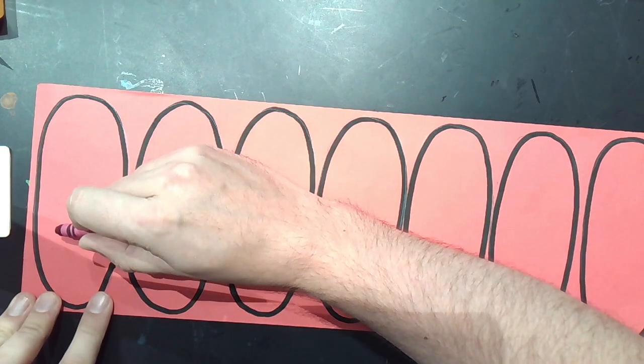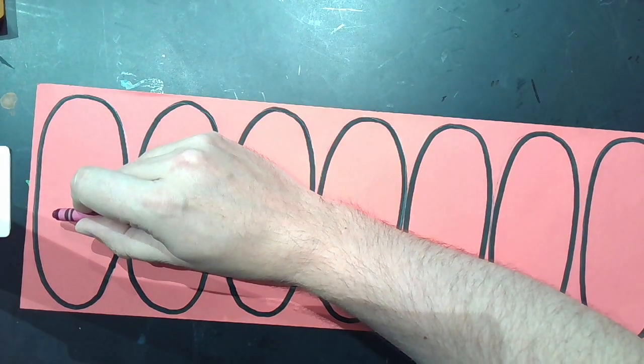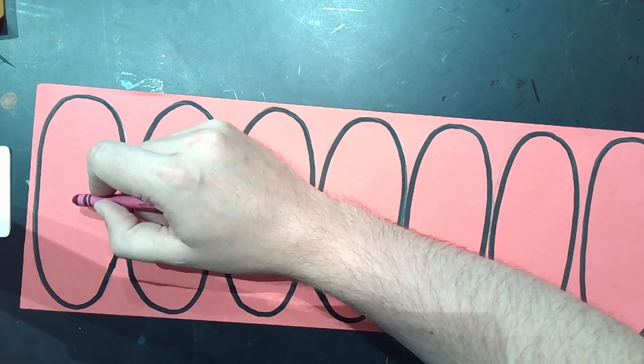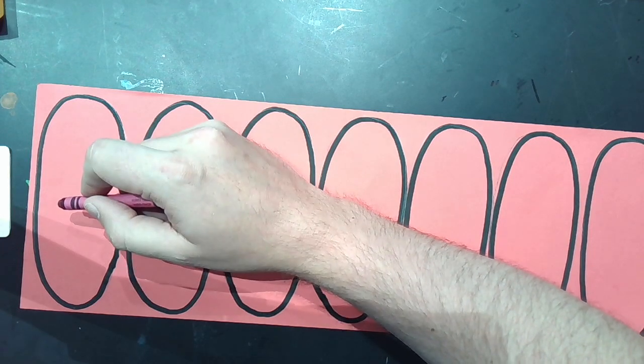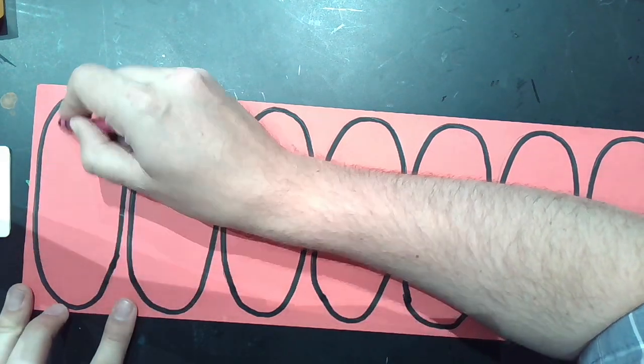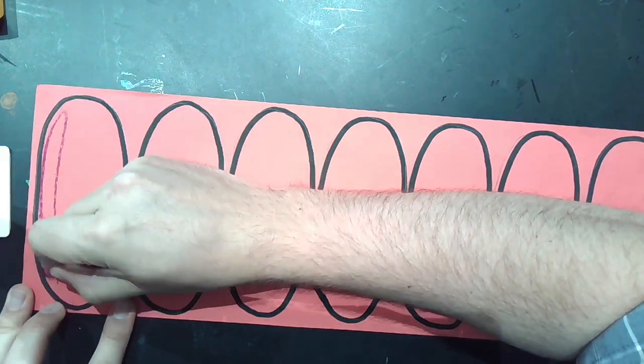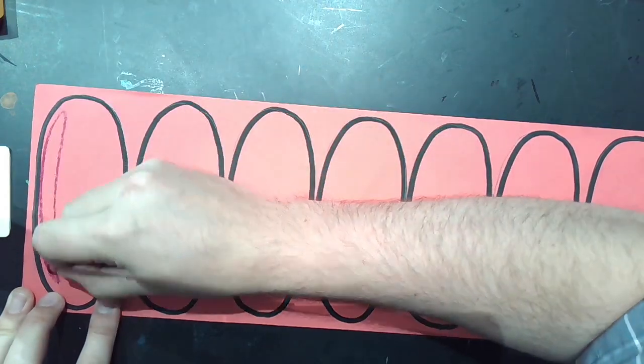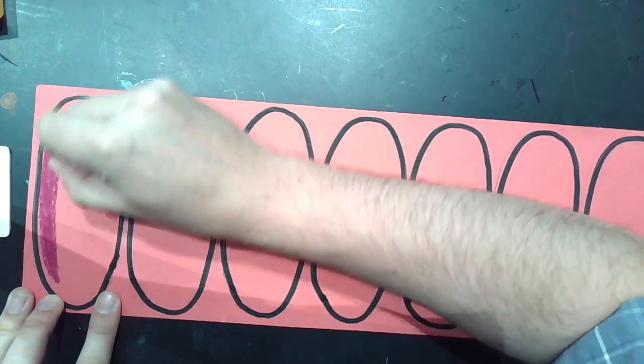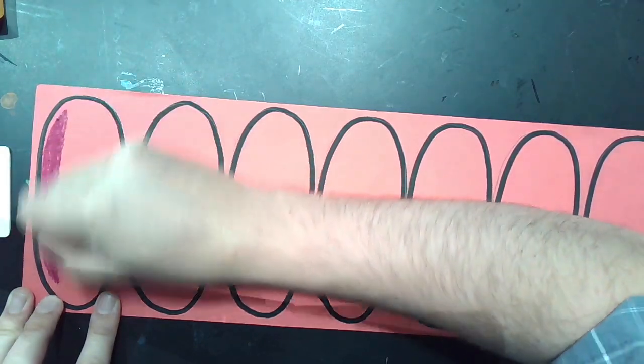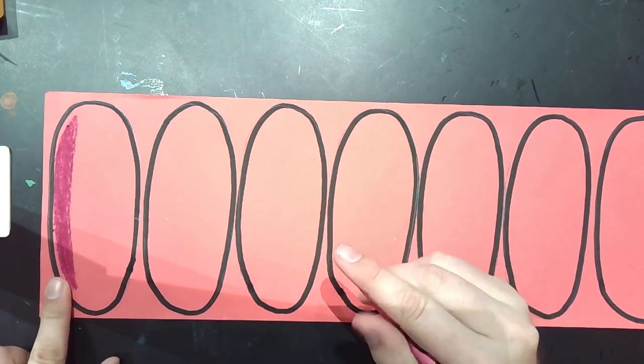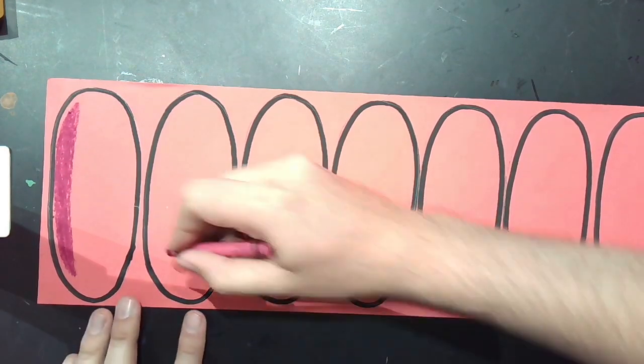And what I'm going to do with this crayon is I am going to color basically just like an oval shape on the left side. The side doesn't matter, but I'm going to pick one side and I'm going to stick with it. The left side of each of these, I'm going to do this tall oval shape and I'm going to color it in really hard. Obviously you don't want to break your crayon, but you want to do some nice coloring. That's enough.